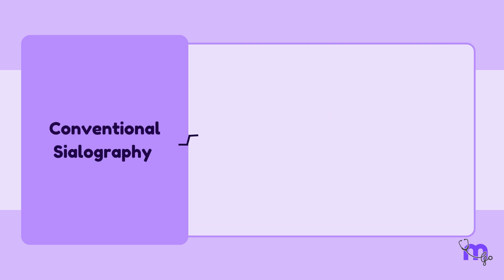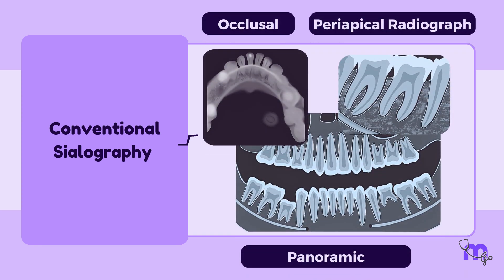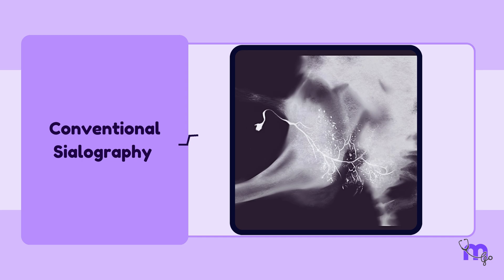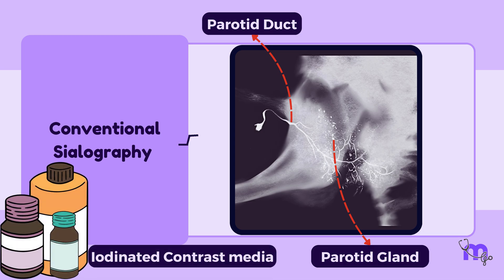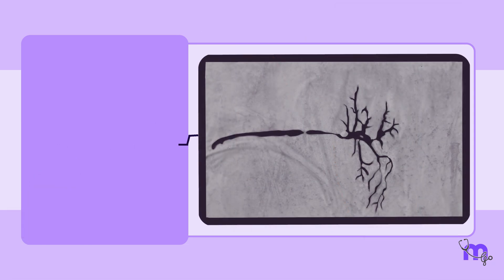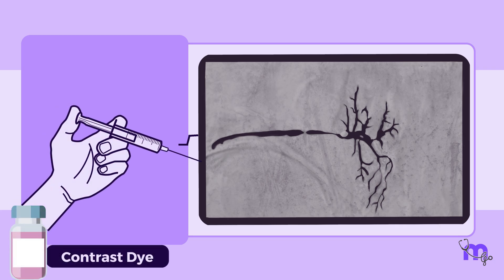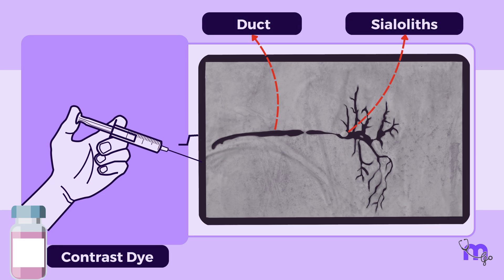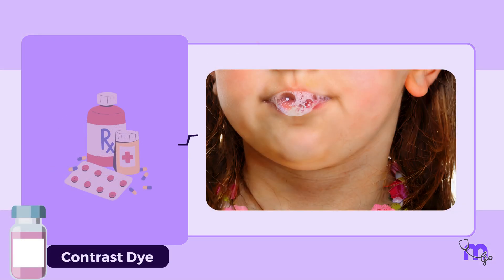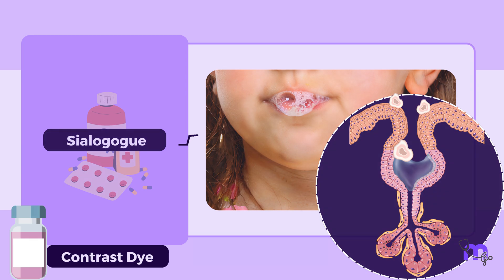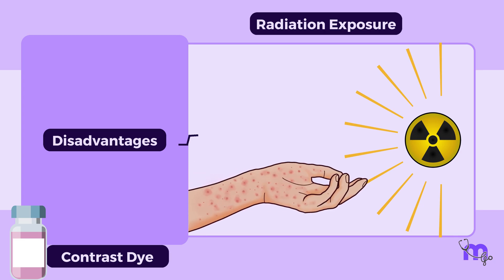Conventional sialography using panoramic, occlusal, and periapical radiographs is traditionally regarded as the gold standard for diagnosing sialolithiasis, as it allows excellent visualization of the salivary ducts and underlying ductal abnormalities. Contrast sialography using iodinated contrast media may be used to visualize the parotid and submandibular ductal systems. A contrast dye is injected via a small needle, enabling radiographic visualization of the ducts and sialoliths. The contrast dye can also act as a sialogogue, stimulating salivary production, allowing smaller sialoliths to dislodge and pass. Disadvantages include radiation exposure and the risk of allergic reaction to the dye.